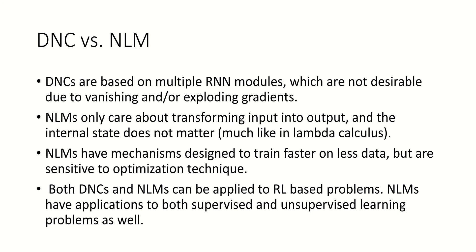The way I designed the NLMs, they also have mechanisms designed to train faster and on less data. However, they are sensitive to the choice of optimization technique. Coincidentally, the optimizer used for both neural Turing machines and neural lambda machines that I've found to perform best so far is RMS prop — which also appears to be what was used in the neural Turing machine paper. Interestingly, both DNCs and NLMs can also be applied to reinforcement learning-based problems, and NLMs have applications to supervised and unsupervised learning as well.